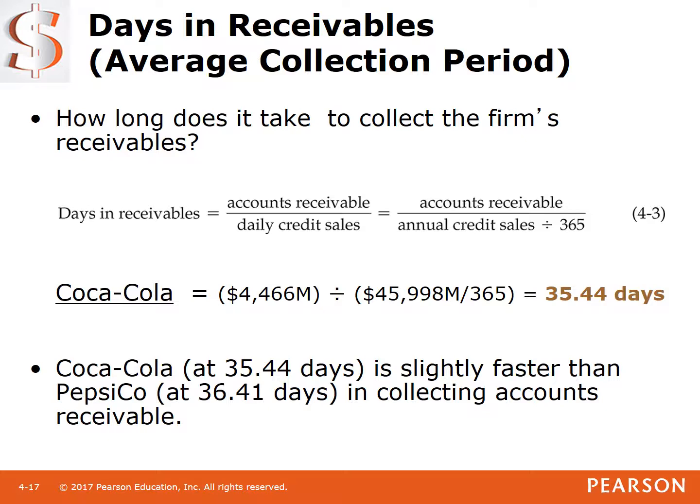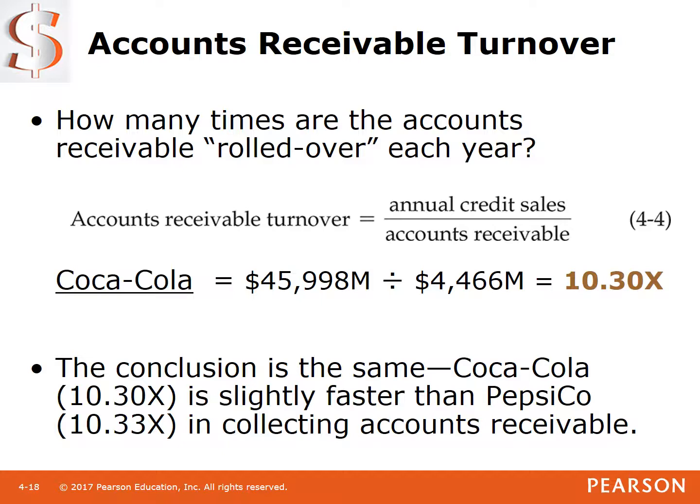We could have a company standard of 30 days and work to achieve that. Comparing to Pepsi, they take about 36.5 days to collect — why does this matter? The faster we get the money, the more we have to pay our bills. Accounts receivable turnover tells you how many times a year you collect on receivables: annual credit sales of $45,998 divided by the $4,466 balance gives 10.3 times. Pepsi collects about the same — we're in line with our competition.